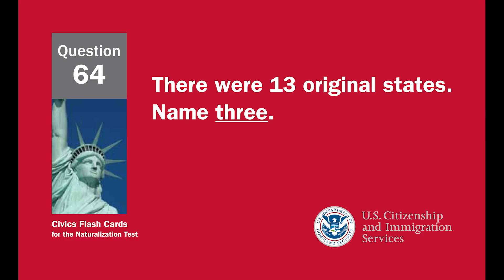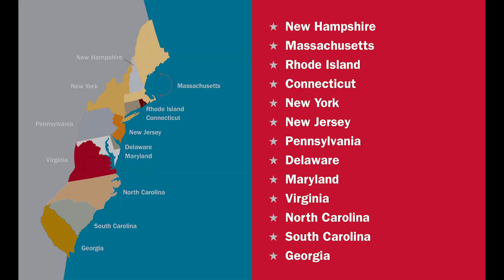There were 13 original states. Name three. New Hampshire, Massachusetts, Rhode Island, Connecticut, New York, New Jersey, Pennsylvania, Delaware, Maryland, Virginia, North Carolina, South Carolina, Georgia.